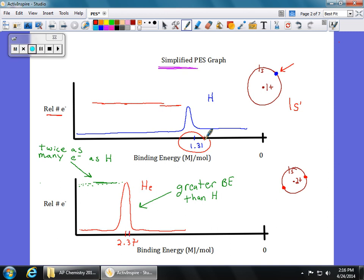If we compare that to something like helium, we look down here at the bottom graph. So this is helium here, you're going to see two things about it. The peak is higher energy, 2.37. And it's also a higher peak, so that the peak is over here. And there's no number over here, it just says relative number of electrons.